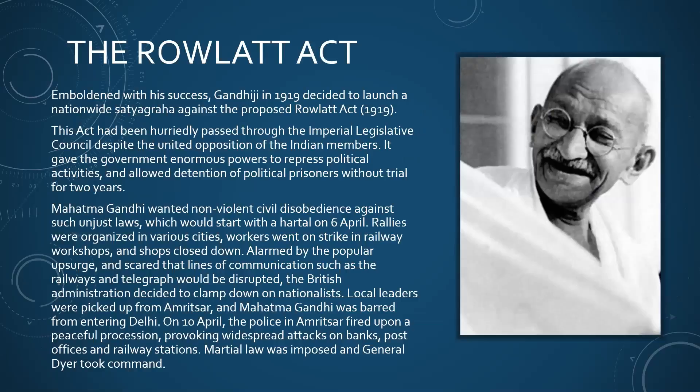With all his success in the years of 1917–1918, in 1919 Gandhiji decided to launch a nationwide Satyagraha movement against the Rowlatt Act, which was passed by the Imperial Legislative Council, though it was opposed by many Indian members. The Rowlatt Act gave the government enormous powers to repress political activities and allowed detention of political prisoners without trial for two years. Gandhi wanted a non-violent civil disobedience movement against such unjust laws and went on a hartaal on 6th April.